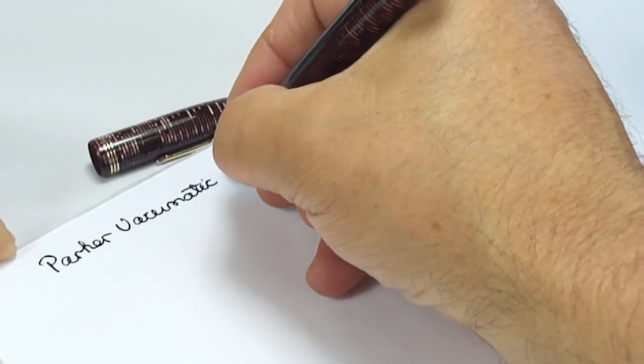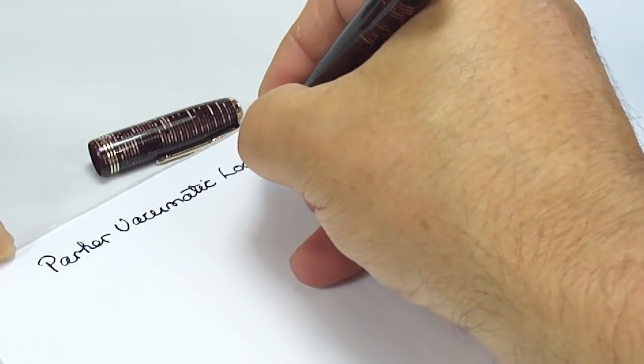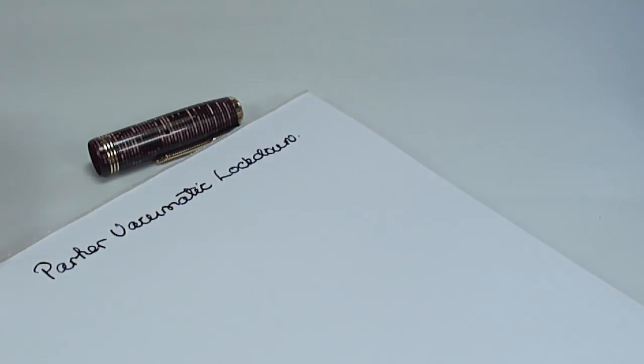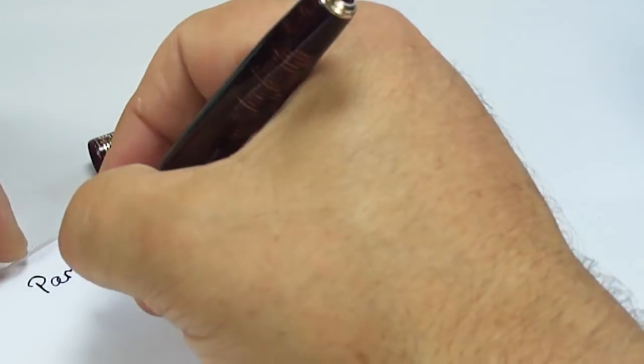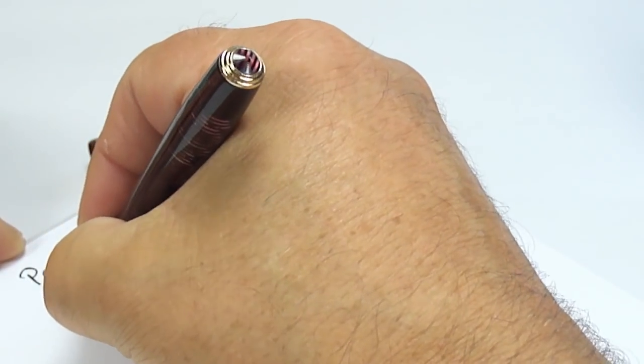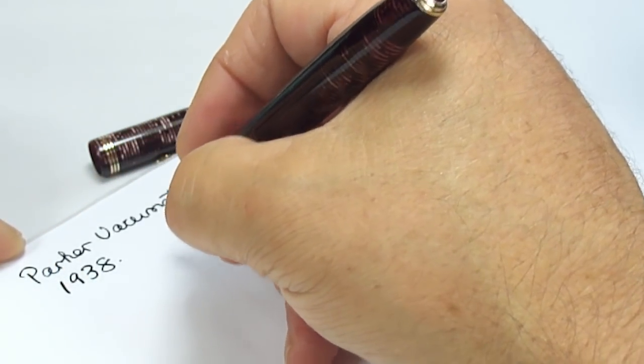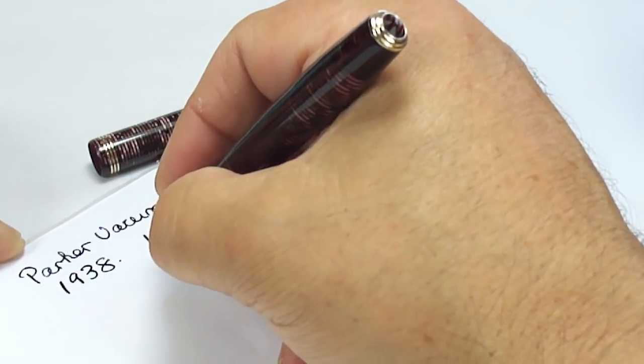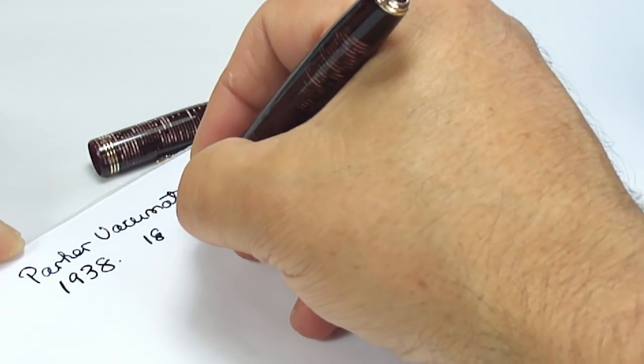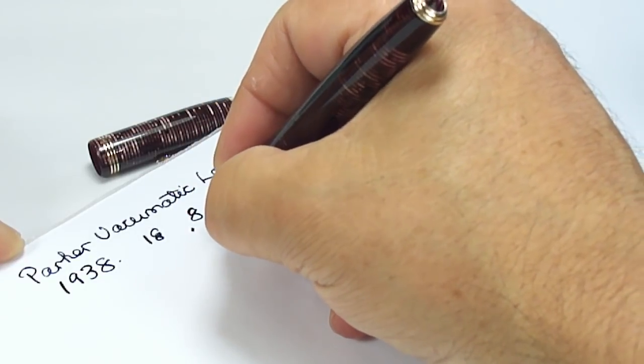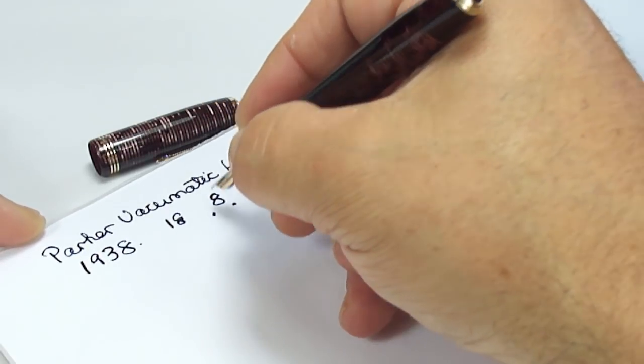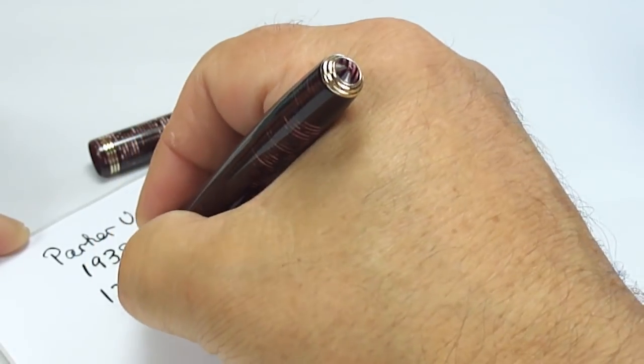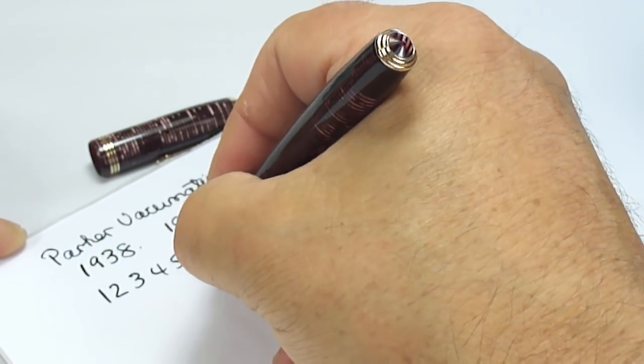So, it's a Parker Vacuumatic, what we term as a lockdown filler. Let's just dip it again. Nice and simple, easy to do on this pen. We're dating it to 1938. As we said earlier, the nib is showing a number 18, which means it's the first quarter of 1938. Whereas on the barrel, it's showing a number 8, with two dots, which indicates that it's 1938, but it's the second quarter of 1938.